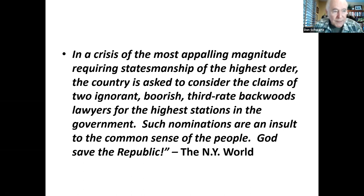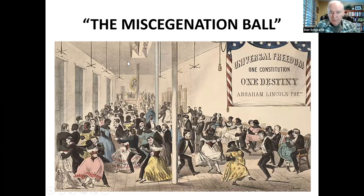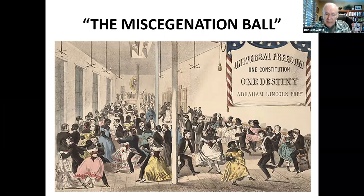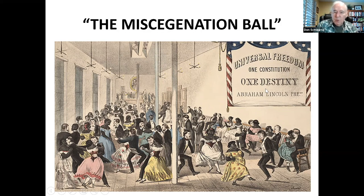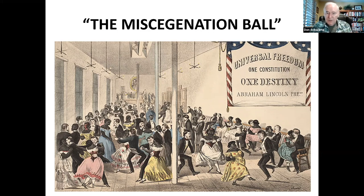Democrats continued to play the race card, portraying Lincoln as promoting racial intermarriage. A campaign poster called 'The Miscegenation Ball' showed blacks and whites dancing together under the banner 'Universal Freedom, One Constitution, One Destiny, Abraham Lincoln.' This was a Democratic poster conveying that if Lincoln were re-elected, blacks would be free to intermarry with whites — used as a fear tactic.